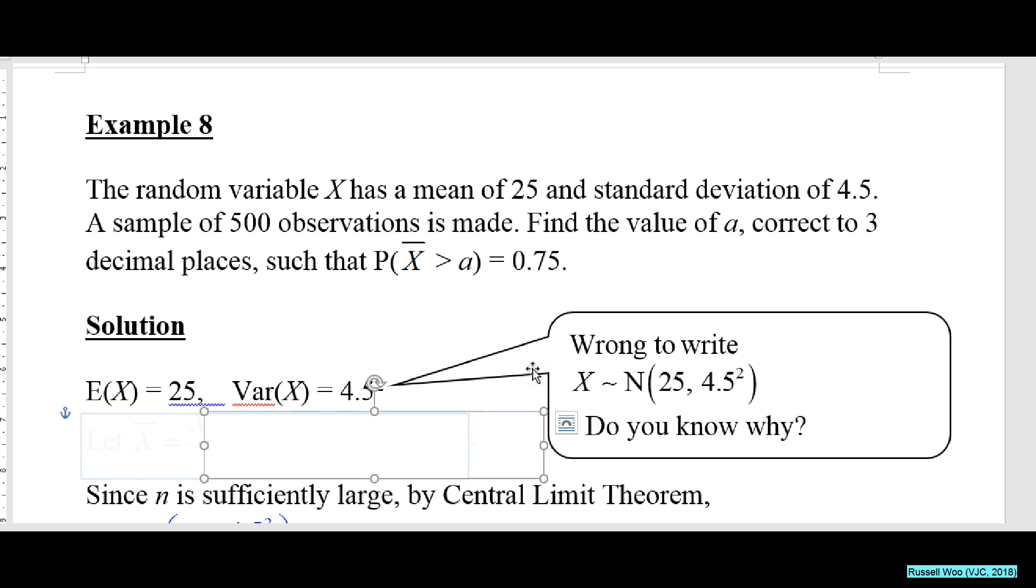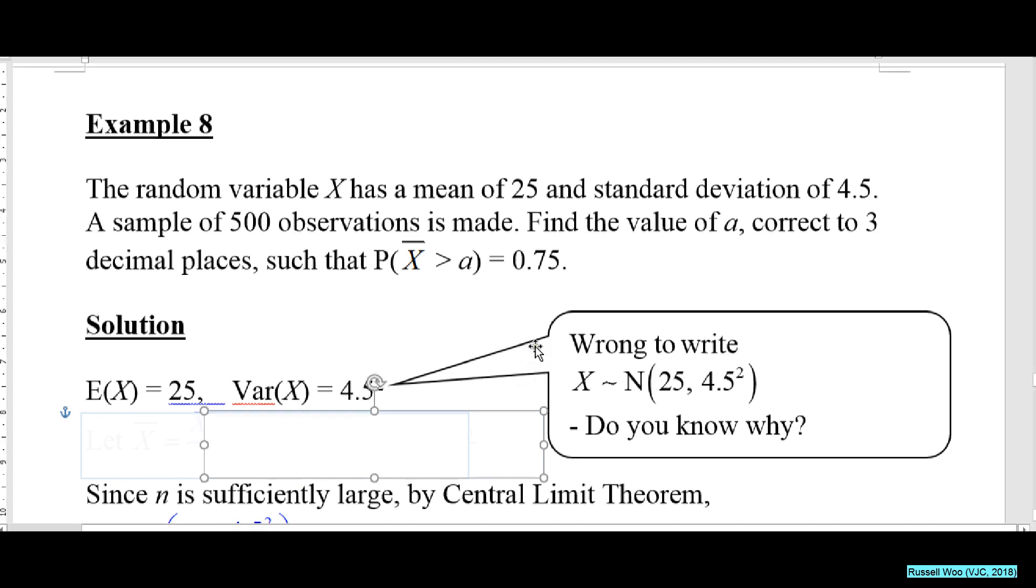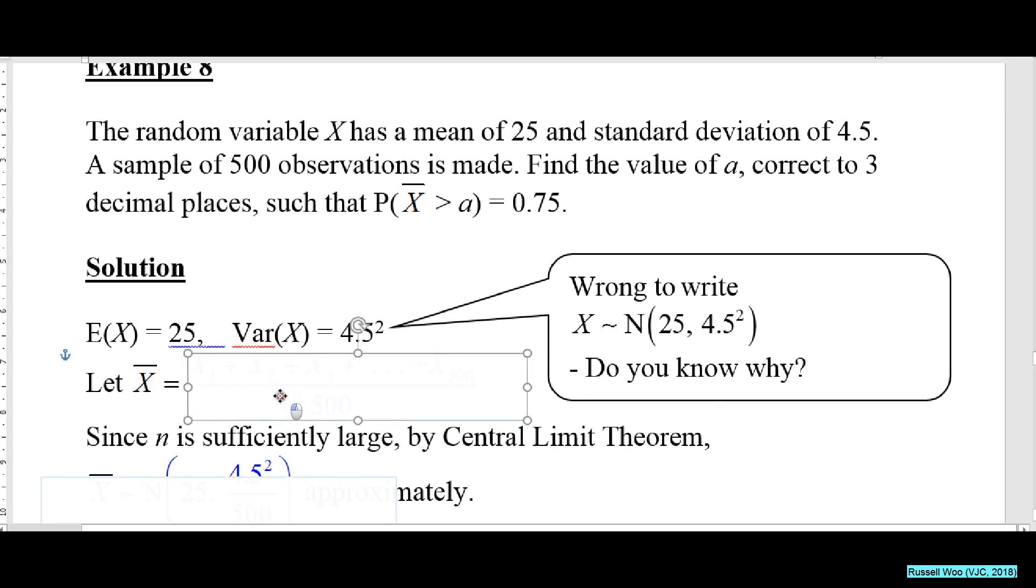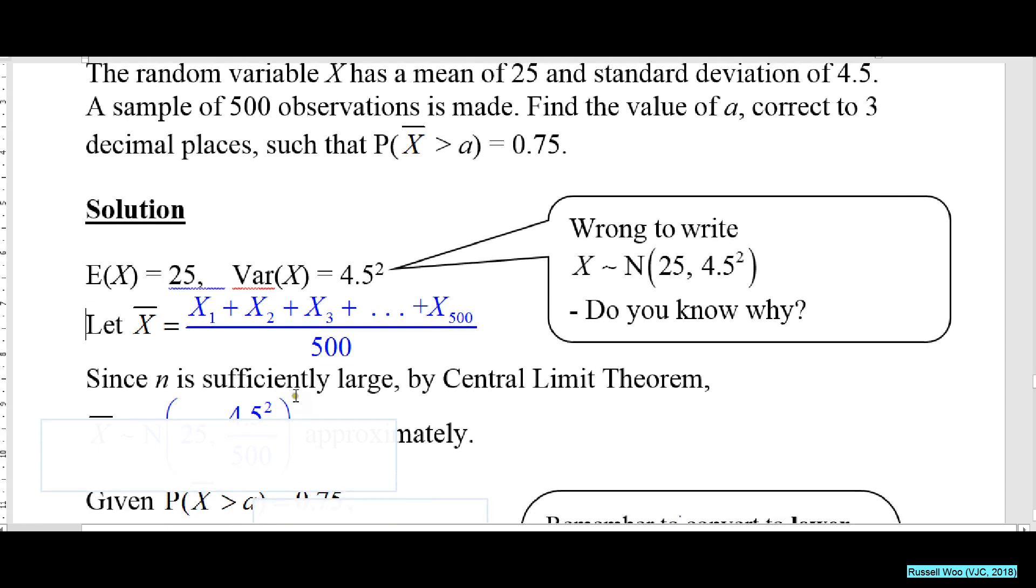X̄ is actually X1 plus X2 plus X3 plus X4... all the way to X500 divided by 500. Now I need you all to do this: even if X is not normally distributed, X̄ will be normally distributed.